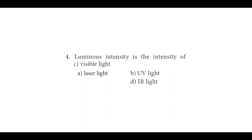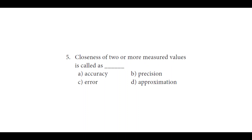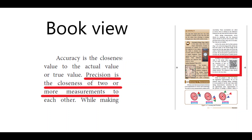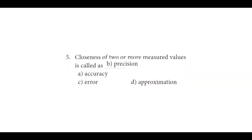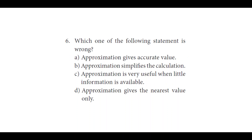The fifth question: closeness of two or more measured values is called ___. We have four options: A: accuracy, B: precision, C: error, and D: approximation. From the textbook page: accuracy is the closeness of a value to the actual or true value, while precision is the closeness of two or more measurements to each other. So the answer is B: precision.